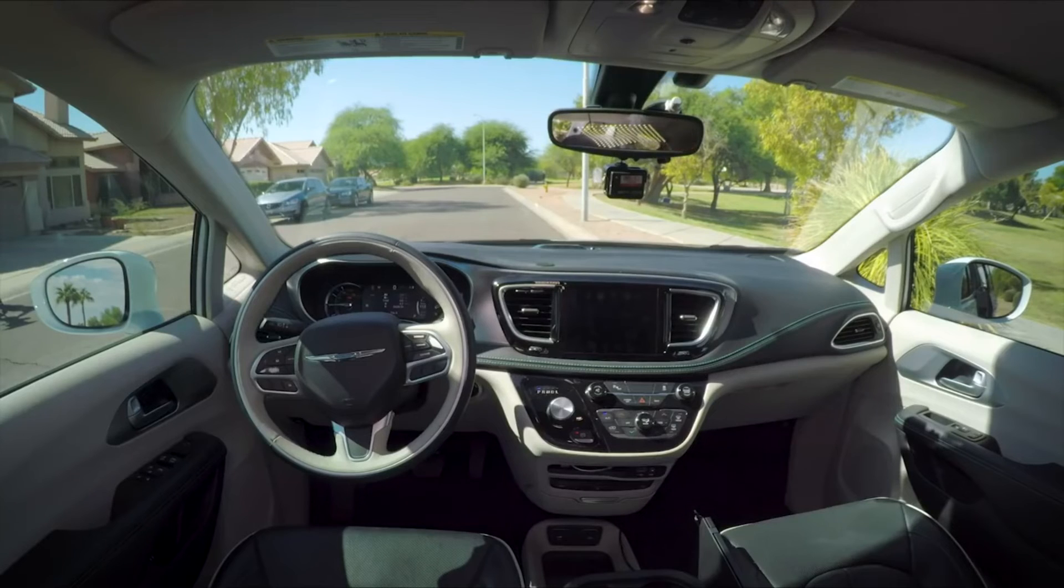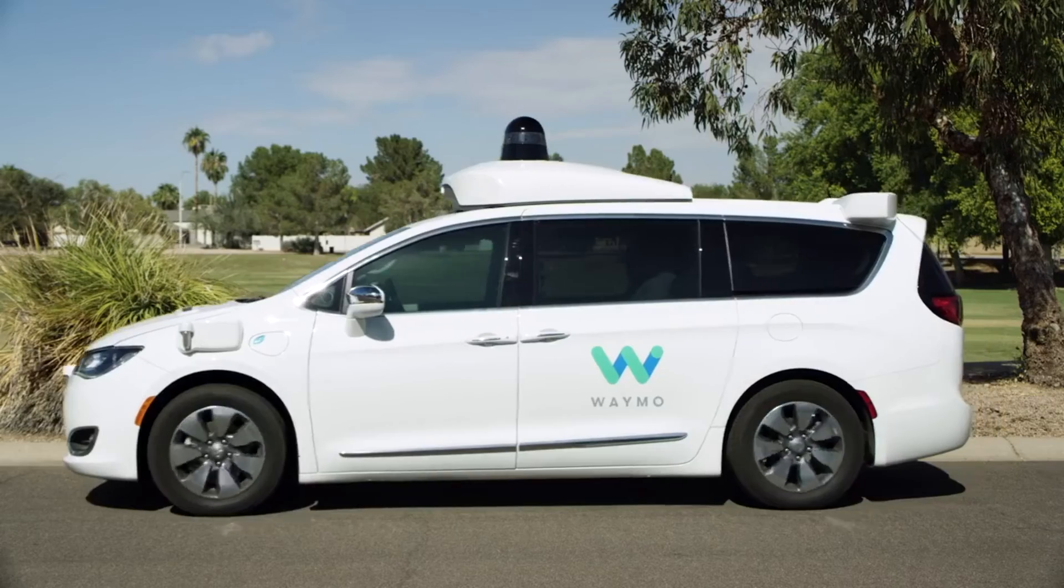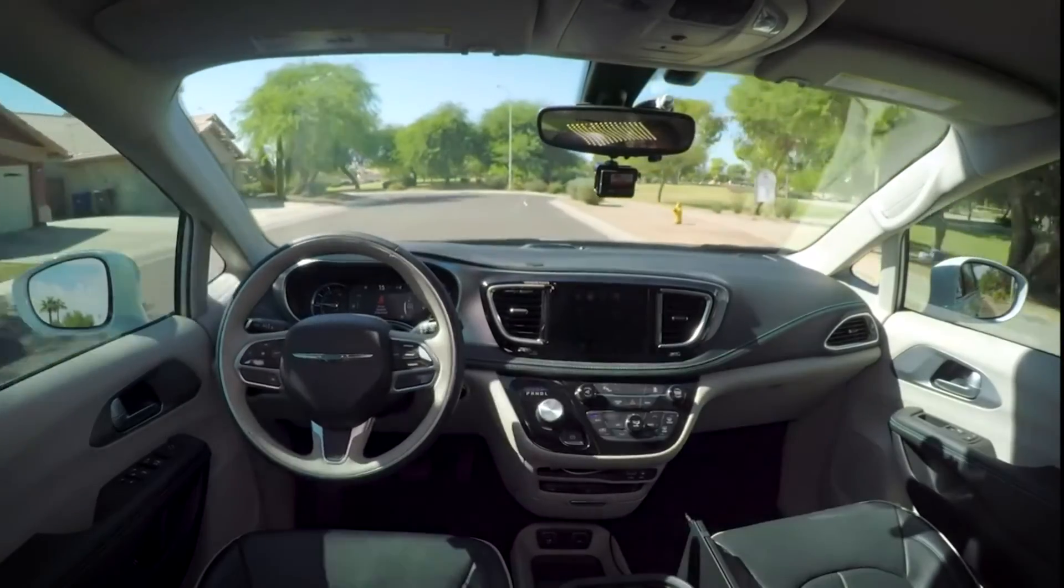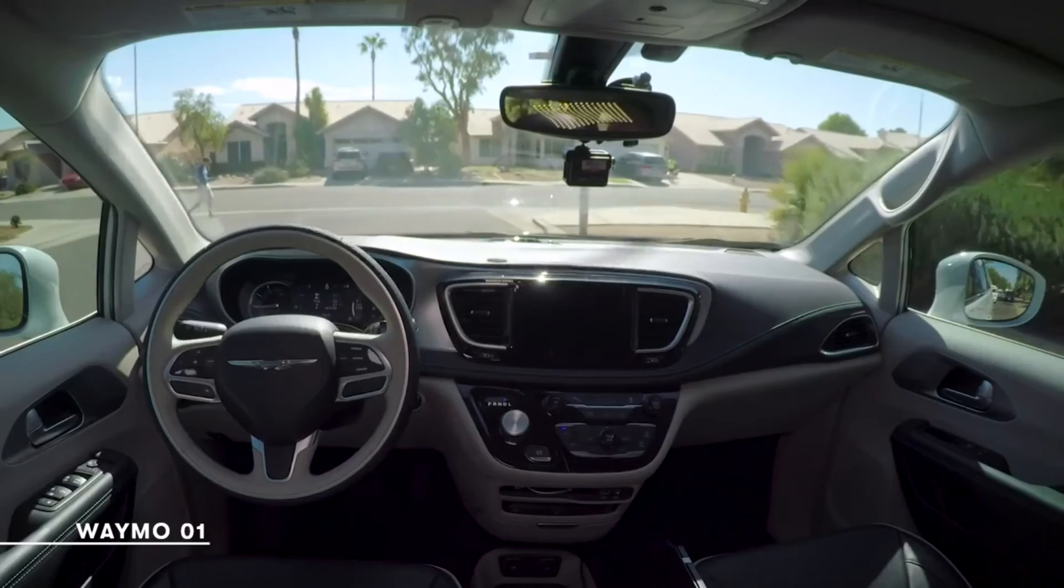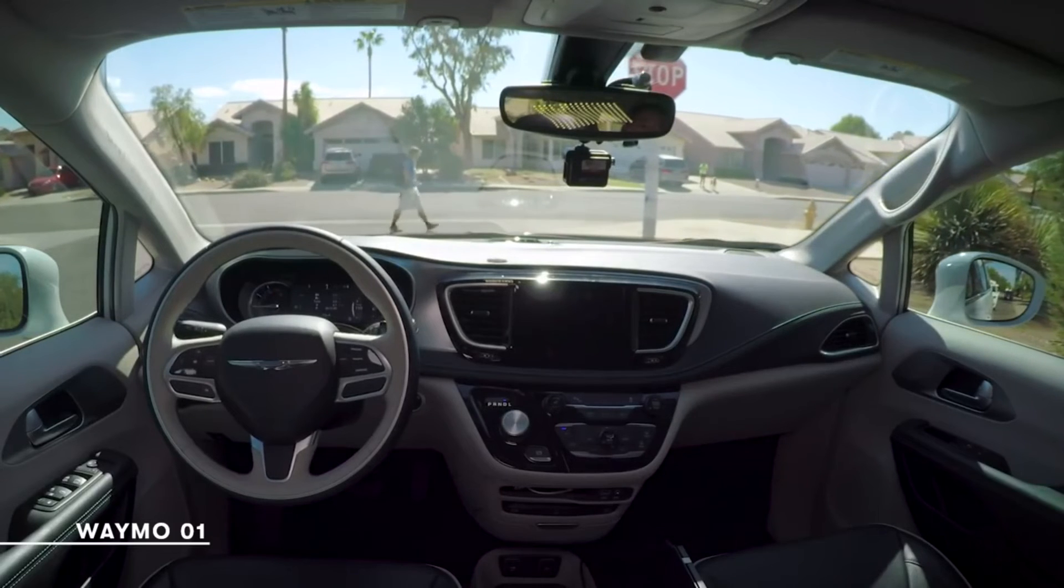While the data source is still a secret recipe, the Google driverless car is powered by artificial intelligence that utilizes the input from video cameras inside the car, a sensor on the vehicle's top, and some radar and position sensors attached to different positions of the car.